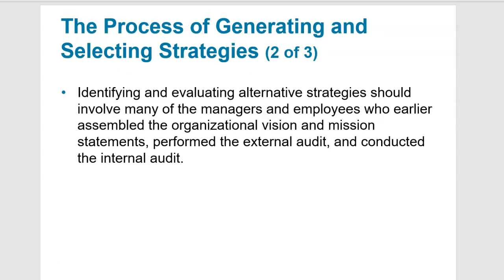The first step would be for a company to write down all the different strategies they could or should be involved with. The management team should get together with their stakeholders—specifically the employees—and think about how the organizational vision and mission statements are going to lead to a decision on what strategic direction the company should go. The external audit and internal audit from previous chapters all go into the knowledge bank the company will draw from to make these strategic decisions.